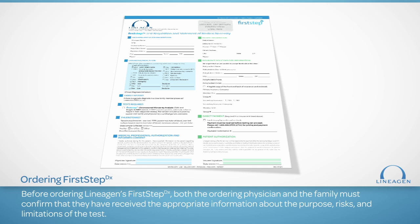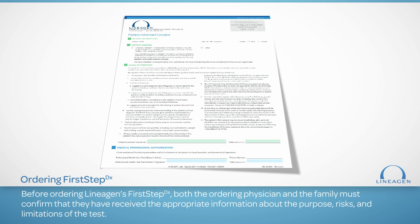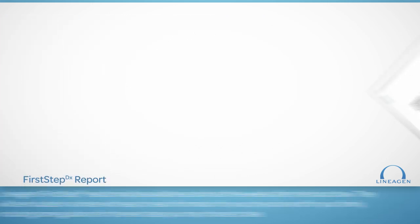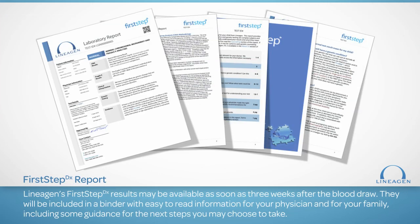If you and your doctor decide genetic testing using Lineagen's First Step DX is the right choice for your family, your doctor must order the test. The requisition form must be signed and completed by the doctor as well as the person being tested; if the person being tested is a child, a parent or guardian must sign. Both the ordering doctor and the person being tested must confirm they have received information about the purpose, risks, benefits, and limitations of the test. Results may be available as soon as three weeks after the blood draw, and will be included in a binder with easy-to-read information for your doctor and family, including guidance for the next steps you may choose to take.